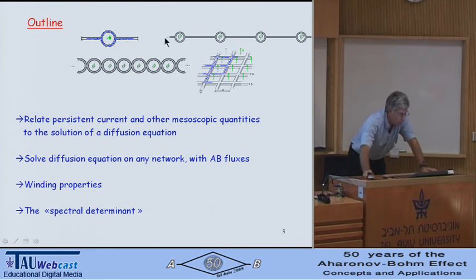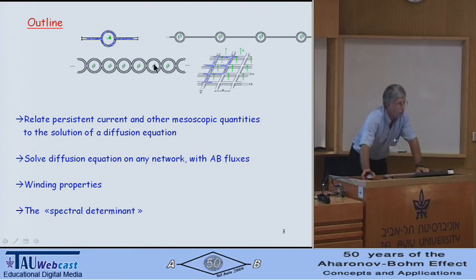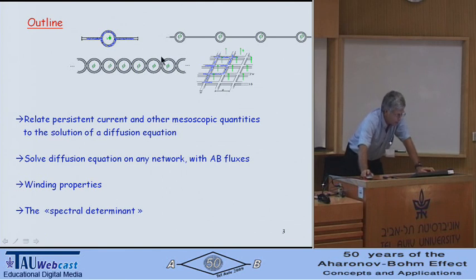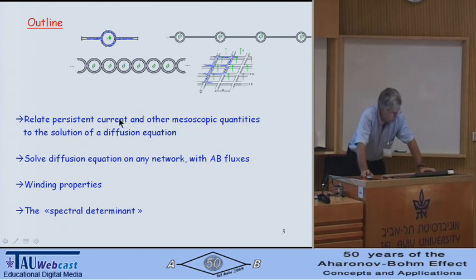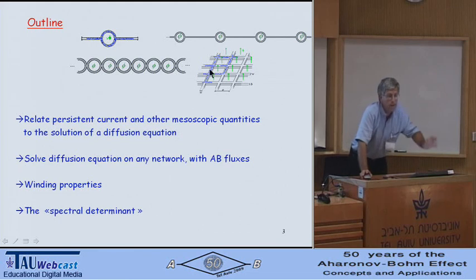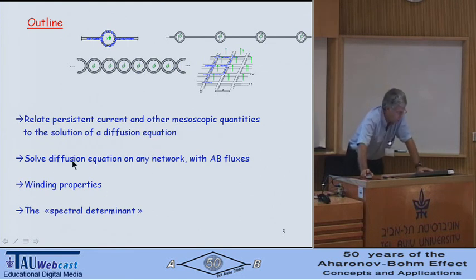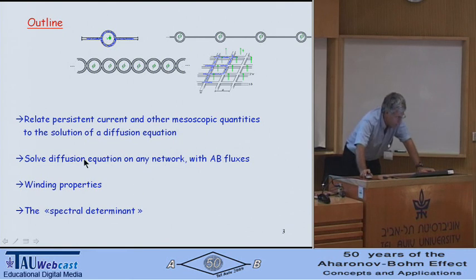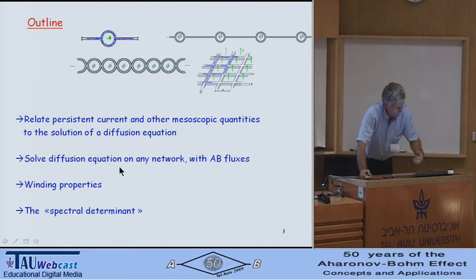The outline is the following. I want to see how these mesoscopic quantities evolve for different geometries — for example, rings that are close to each other or far from each other. To answer this, since we are dealing with disordered systems, I will relate these physical quantities to the solution of a diffusion equation on any network with any Aharonov-Bohm fluxes. This will give us information about winding properties around different loops. The tool I will use is the spectral determinant, which contains the basic information about diffusion in these geometries.